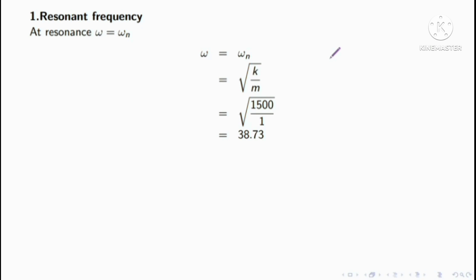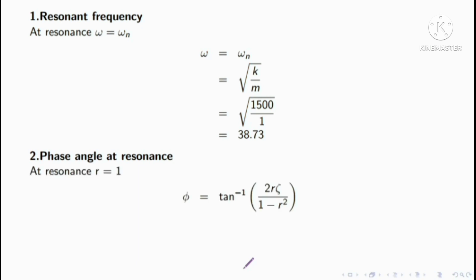The resonance frequency is the natural frequency. Now finding the phase angle at resonance. The phase angle phi is equal to tan inverse of 2r zeta divided by 1 minus r squared. At resonance, r is equal to 1, so 1 minus r squared equals 0.